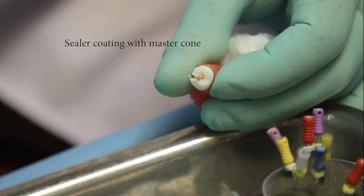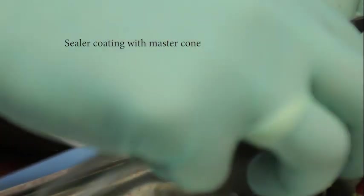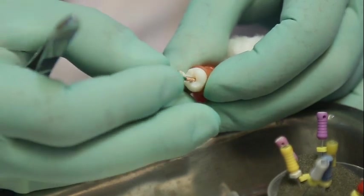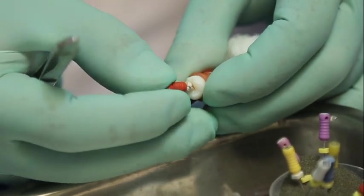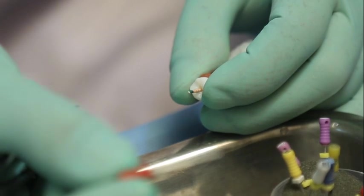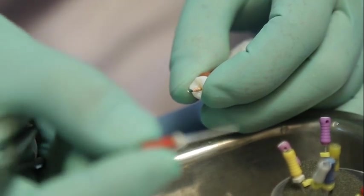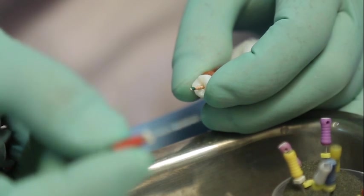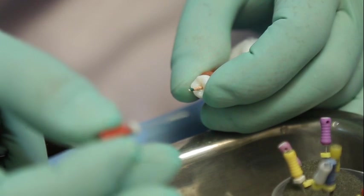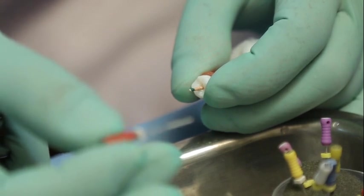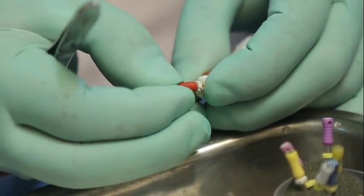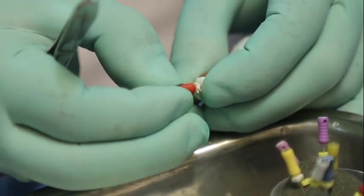Then you can use the flare spreader. Here this is a size 25 flare spreader. In most of the cases it will be enough for the lateral condensation. This is 5% taper spreaders from Mani. If it is a very narrow canal you can use the yellow one. And if it is a very large canal you can use the blue one. So you can do the lateral condensation.